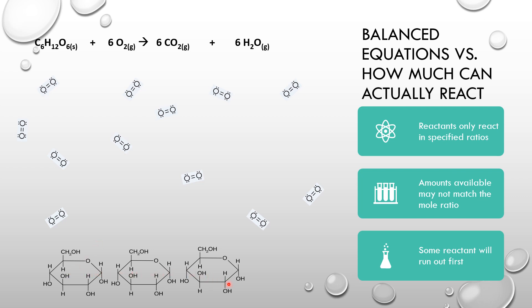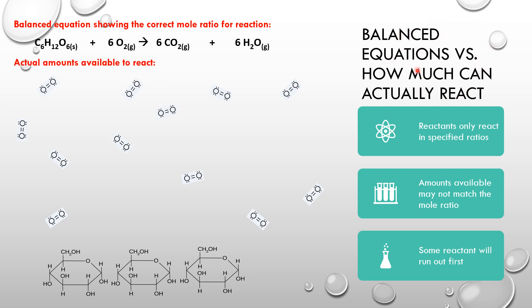What if we start off with three moles of glucose and twelve moles of oxygen? We've got three moles of glucose with a possibility of reacting with twelve moles of oxygen. The problem is they can only react in a one-to-six ratio, and this is not a one-to-six ratio. Reactants can only react in specified mole ratios — in this case one to six — and the amounts available may not match that ratio, so some reactant is going to run out first.